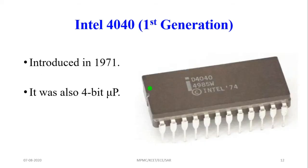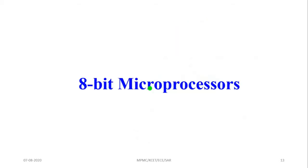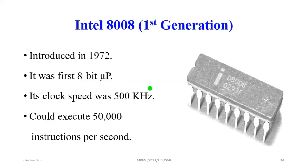The Intel 4040 is also a first generation microprocessor, also introduced in 1971. It was also a 4-bit microprocessor and is cheaper than the Intel 4004. Additionally, there is the Intel 8008, also a first generation microprocessor, introduced in 1972. It was the first 8-bit microprocessor, with a clock speed of 500 kilohertz and capable of executing 50,000 instructions per second.